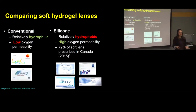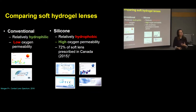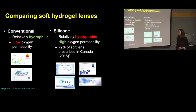Soft lenses dominate the contact lens market. There are two main types of soft contact lenses: conventional hydrogels and silicone hydrogels. Conventional hydrogels are mostly hydrophilic but have low oxygen permeability, while silicone hydrogels are more hydrophobic but have higher oxygen permeability. Silicone hydrogels are the most popular lenses on the market today — in Canada in 2015, an estimated 72% of all soft lens prescriptions were silicone hydrogels.